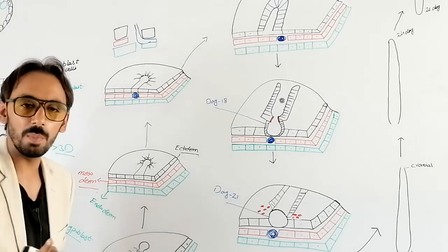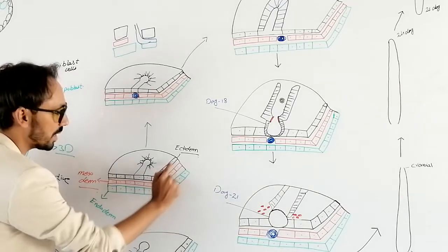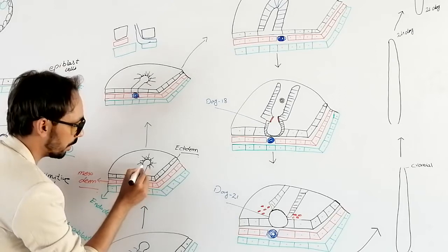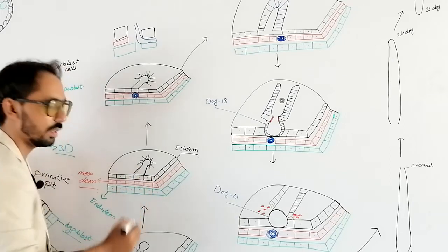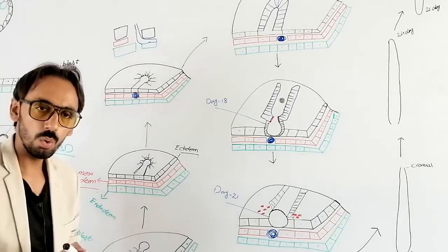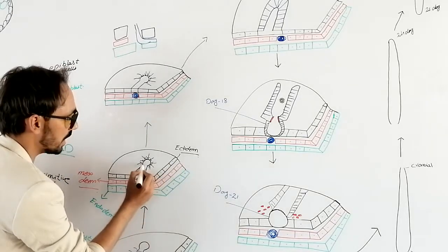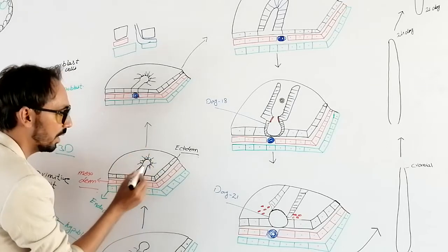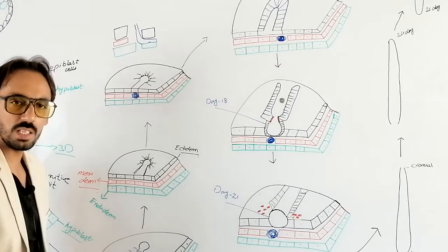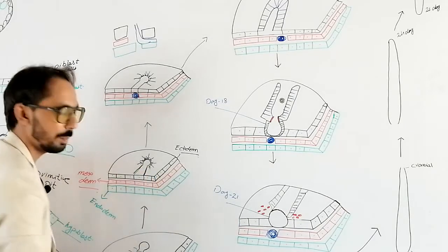This is the key point you have to remember: during gastrulation, the ectodermal cells go deeper inside through the primitive groove. But in the making of the notochord, the ectodermal cells — as these arrows are representing — will go deeper inside through the primitive pit.